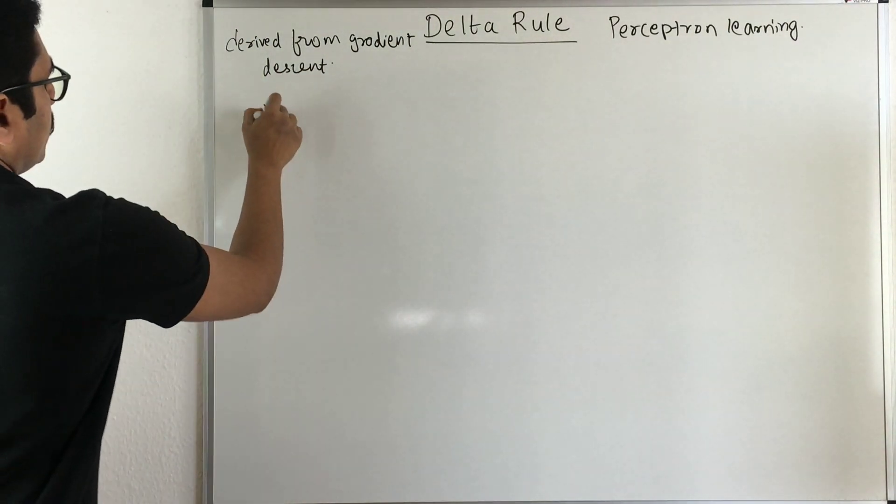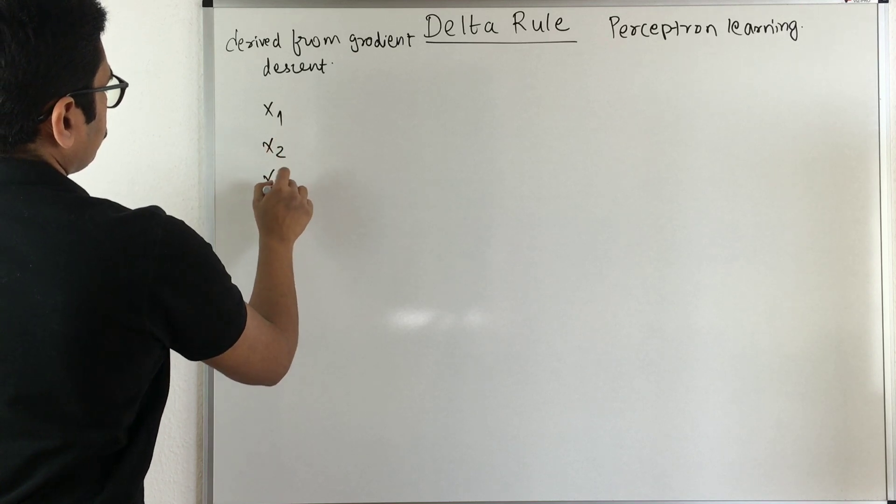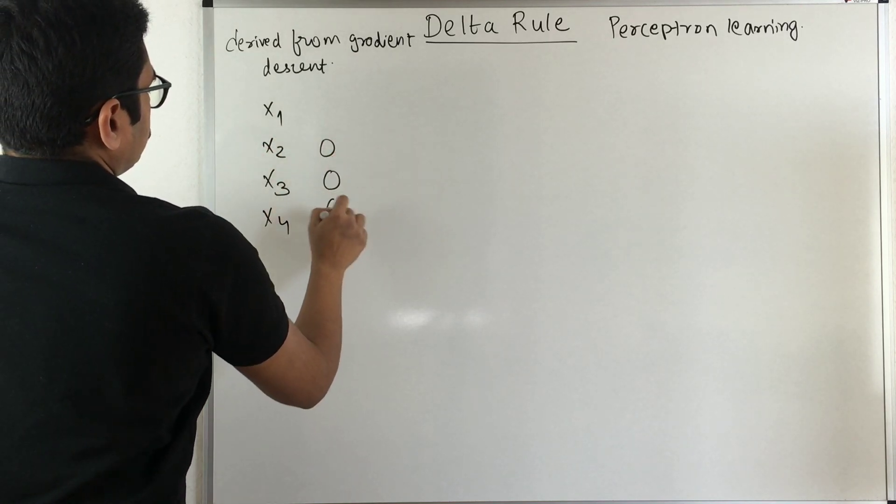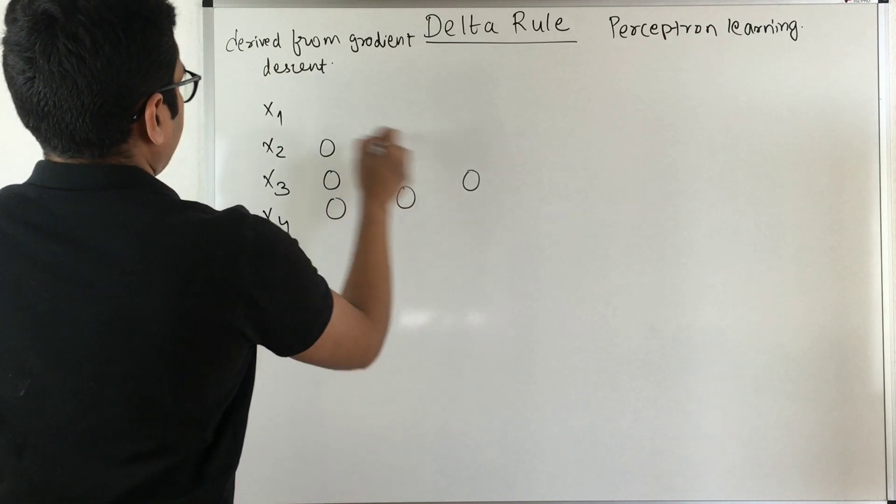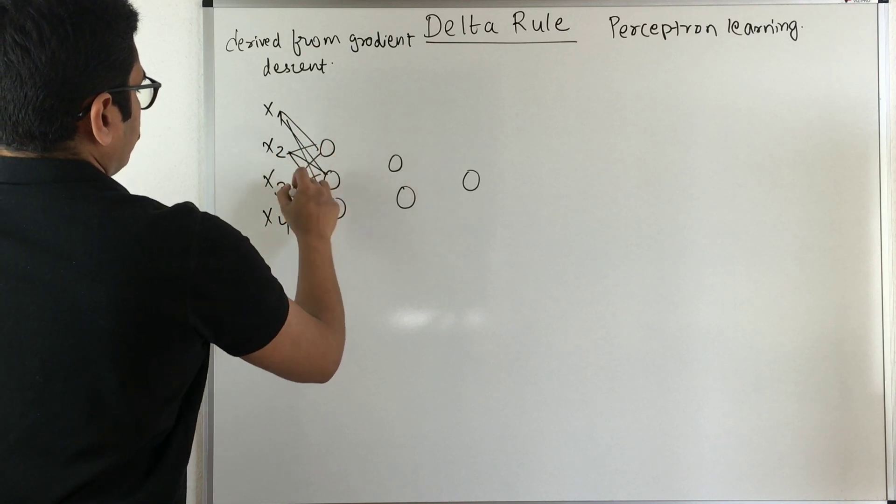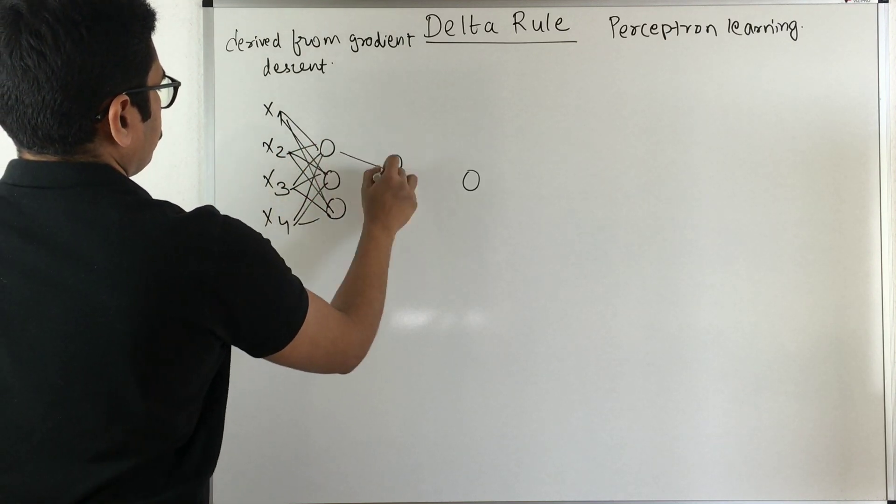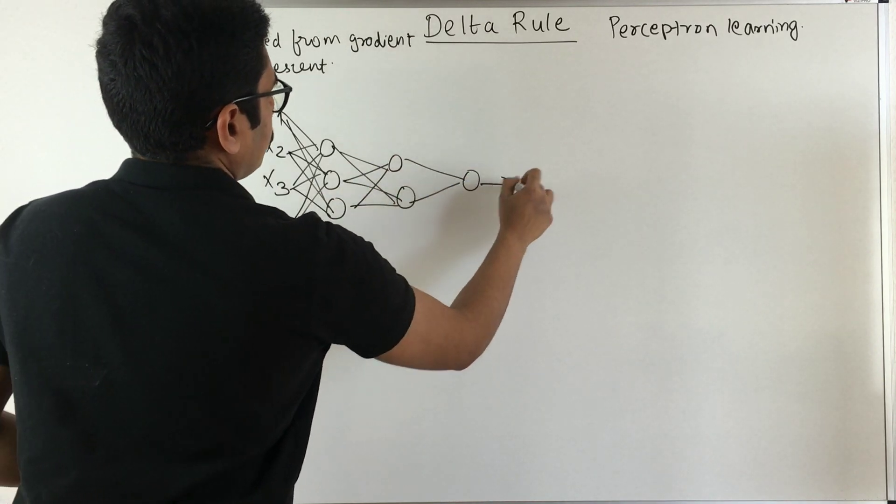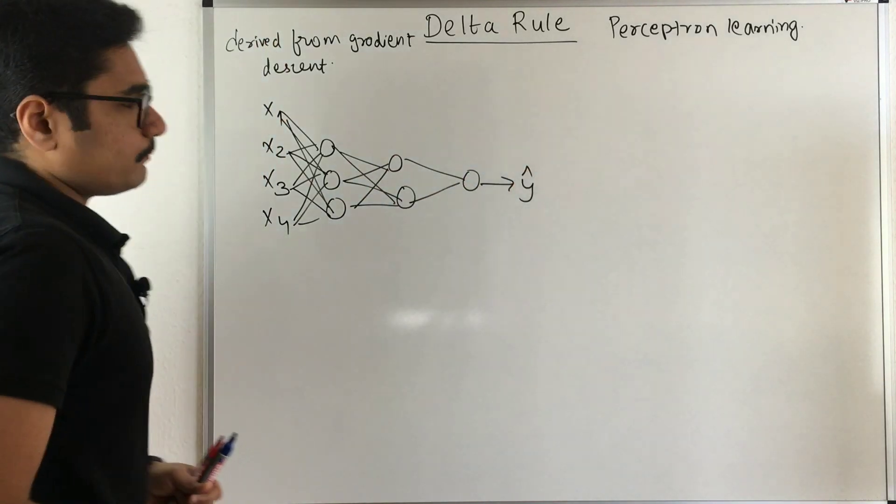So what we basically do is say we have our network, say X4, and then we have say some neurons at this particular point. Then we have some connections which is connecting to this neurons and what we have is we have the final output, that is Y cap.